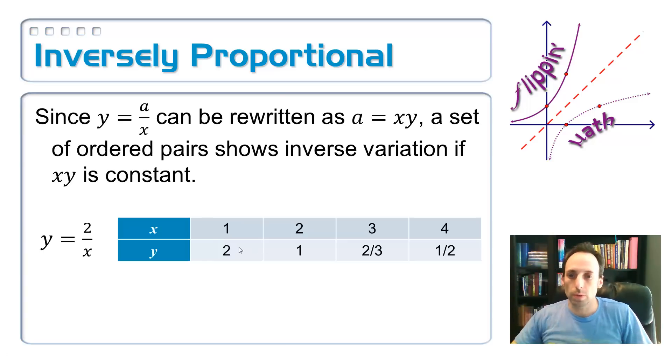And that means if I multiply both of my variables together, I should always get an answer of 2. So, look at this table. 2 times 1 is 2. 1 times 2 is 2. 2 thirds times 2, the 3's will cancel, I get 2. 1 half times 4 is 2.